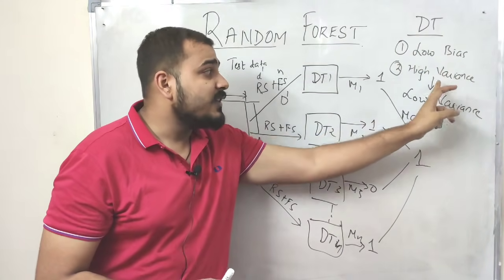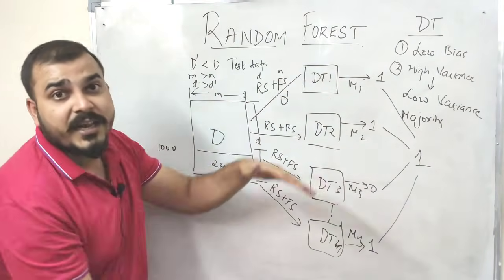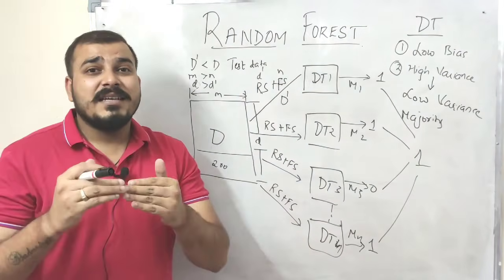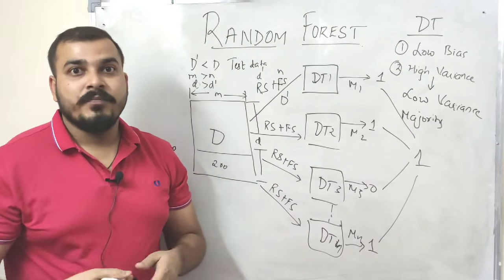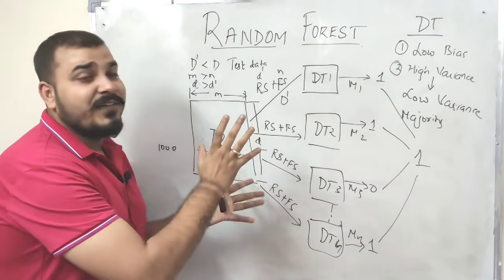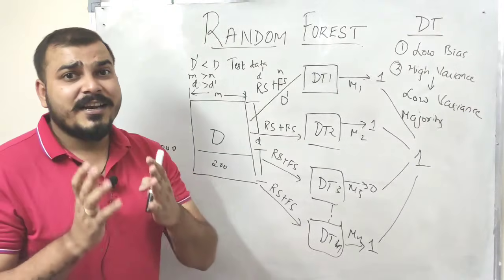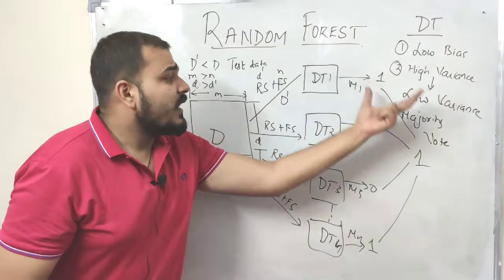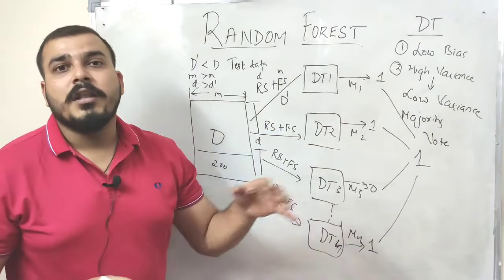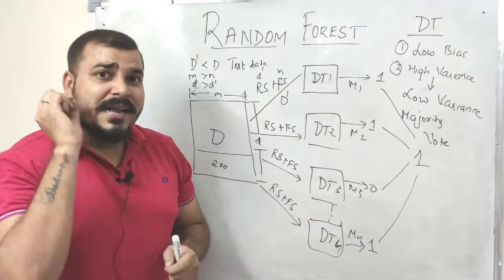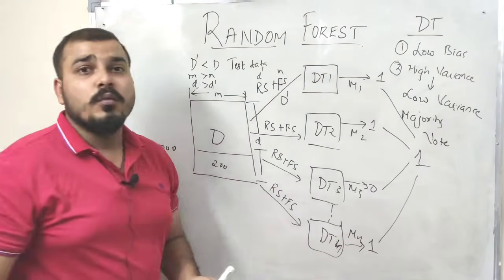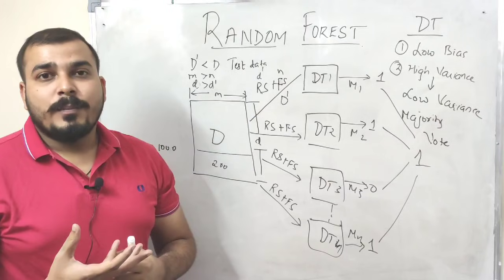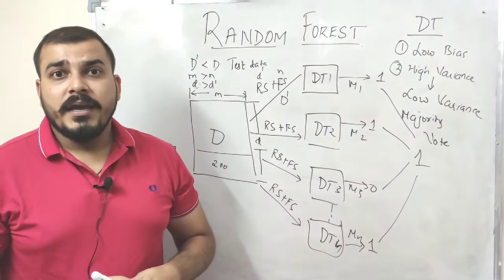To summarize: a single decision tree has low bias and high variance. To convert high variance into low variance, we use multiple decision trees along with row sampling and feature sampling. This gives us very good accuracy on new test data. The key hyperparameter in random forest is the number of decision trees to use, which you can tune accordingly.